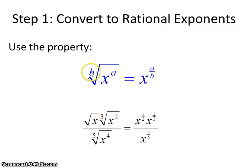So we use this property that the bth root of x to the a power is equal to x to the a over b. So this expression becomes this. The square root of x is x to the one half. The cube root of x squared is x to the two-thirds and the fifth root of x to the fourth is x to the four-fifths.